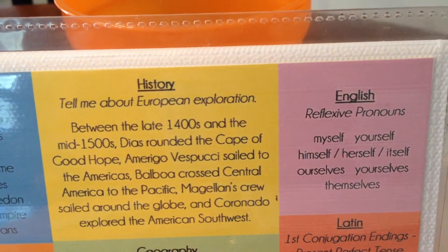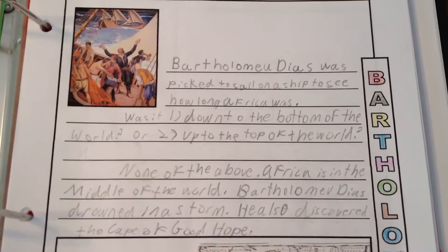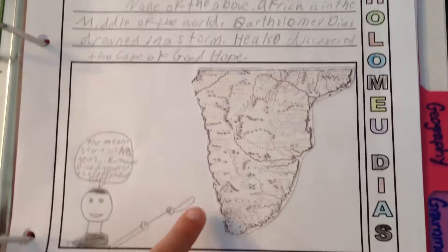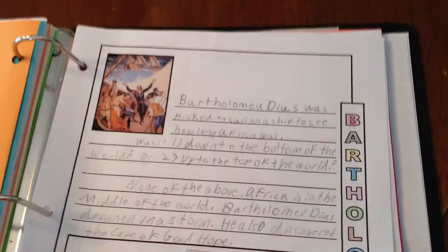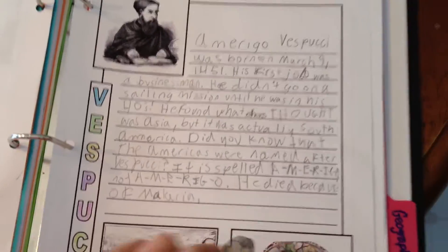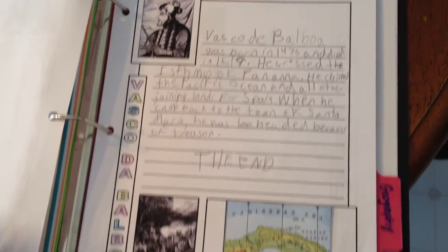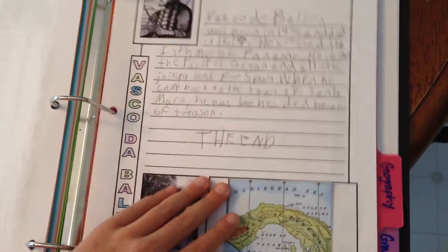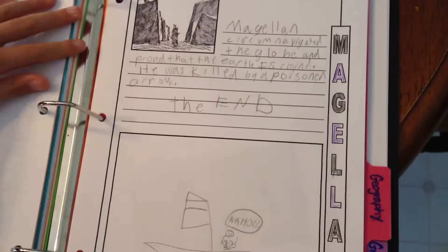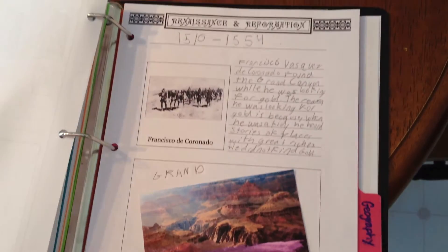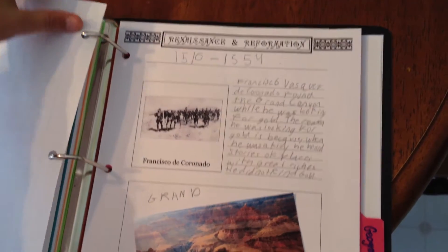Tell me about European exploration. Between the late 1400s and the mid-1500s, Diaz rounded the Cape of Good Hope, Amerigo Vespucci sailed to the Americas, Balboa crossed Central America to the Pacific, Magellan's crew sailed around the globe, and Coronado explored the American Southwest.